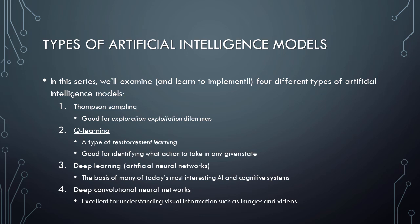Throughout this series of videos, we'll examine and learn to implement four different types of artificial intelligence models. Each of these models can be used as the basis for a wide variety of cognitive computing systems. First, we'll learn about Thompson sampling, which is one of the simplest AI models to understand and implement. Thompson sampling allows the system to learn what to do when faced with a type of dilemma called the exploration-exploitation dilemma. These types of systems can automatically learn to choose actions that will maximize their expected reward.